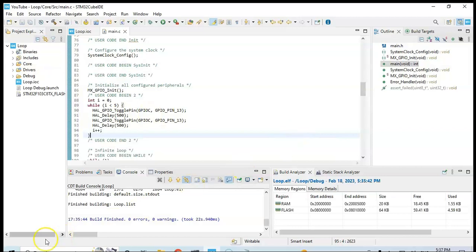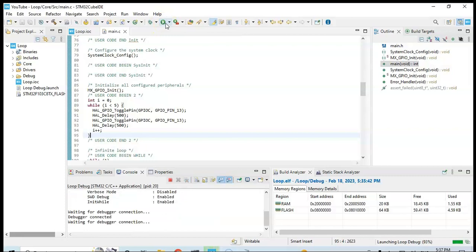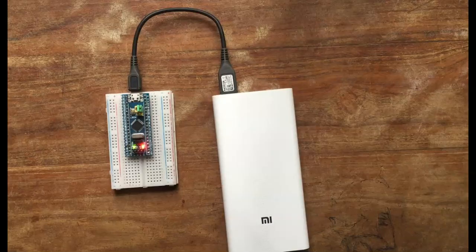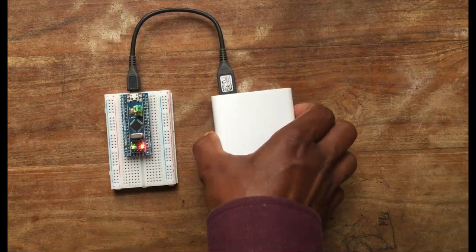After saving, we press this green button to run the code, this button. So it's been verified successfully. Watch this green light here. Switch it on again.